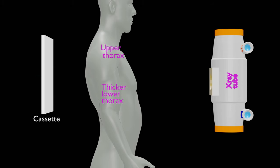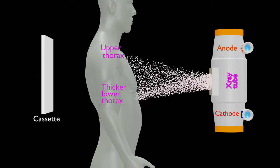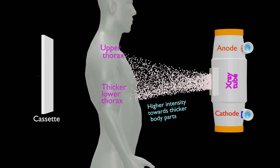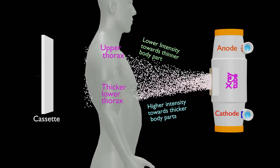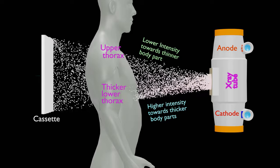For example, thorax anatomy is thicker at diaphragm than upper thorax region. More x-rays are required for thicker lower thorax than upper thorax. If we keep cathode of tube towards thicker lower thorax, this means we are directing more x-rays at lower thorax than upper thorax. Due to higher thickness, more x-rays will be attenuated in lower thorax.